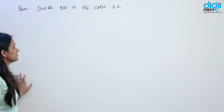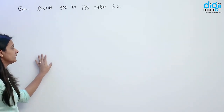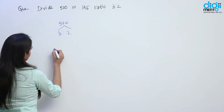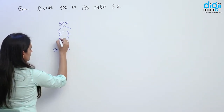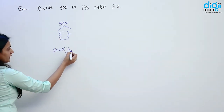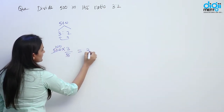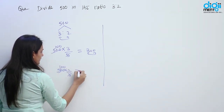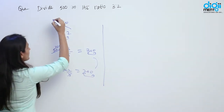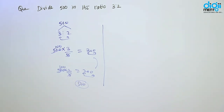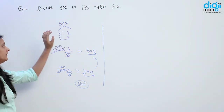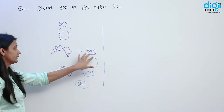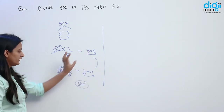Next question: divide 500 in the ratio 3 ratio 2. Hamein 500 ko divide karna hai 3 ratio 2 mein. The first number is 500 into 3 by 5, we get 300. The second number is 500 into 2 by 5, that is equal to 200. Jab hum in values ko add karenge toh hamein 500 milega.